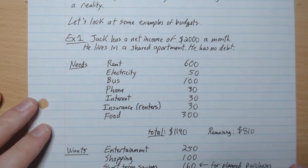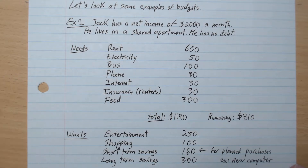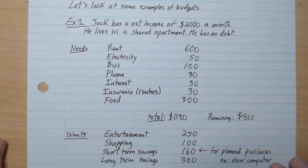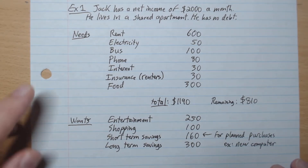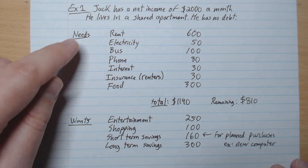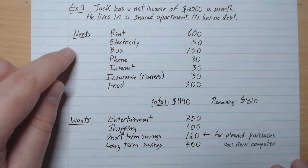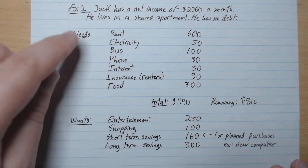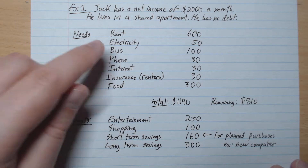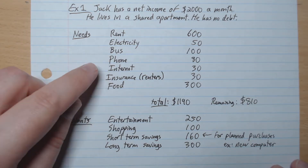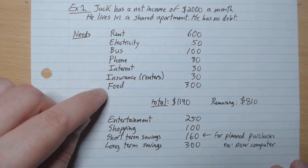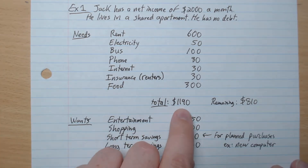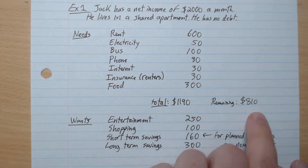In example one, Jack has a net income — so this is after tax and deductions — of two thousand dollars a month. He lives in a shared apartment and has no debt. We divide the budget into needs and wants. His needs include: rent $600, electricity $50, bus $100, phone $80, internet $30, renters insurance $30, and food $300, giving a total of $1,190.